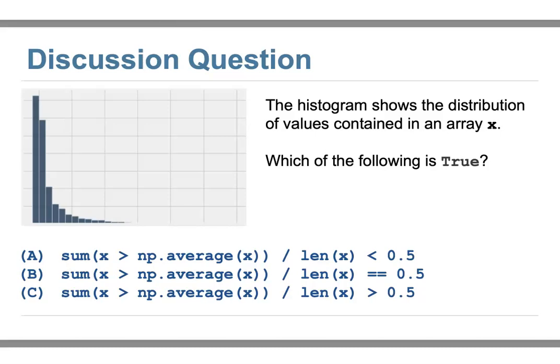Continuing with the discussion question from the previous video — I hope you all discussed with your classmates. The answer is 'a'. What we are looking for is the sum of each element greater than the average for the array. Since that's a comparison operator, it returns true or false. Taking the sum counts how many 'true' values there are, meaning how many elements are greater than the average, divided by the total number of elements in the array.